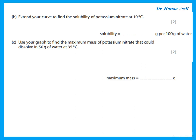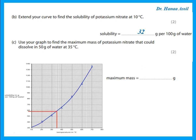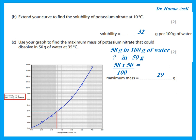Extend your curve to find the solubility of potassium nitrate at 10 degrees Celsius. The graph started from 20, so we extend it going with the curve until we reach 10 degrees Celsius. From this graph, it is 32 grams — your answer should be somewhere around that. Then, use your graph to find the maximum mass of potassium nitrate that could dissolve in 50 grams of water at 35 degrees Celsius. From the graph, 58 grams dissolves in 100 grams of water, so for 50 grams you divide by 2 — that comes out to be 29 grams.